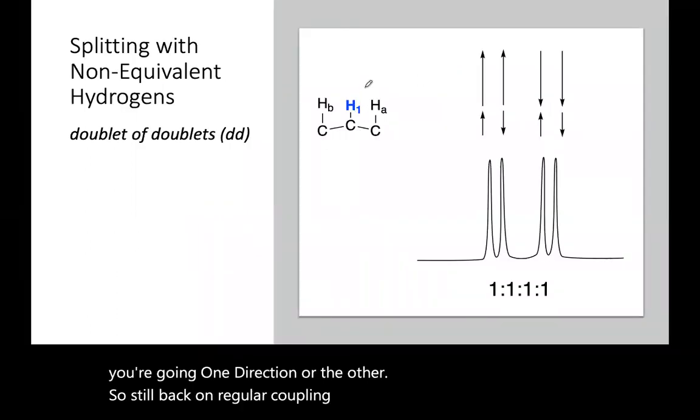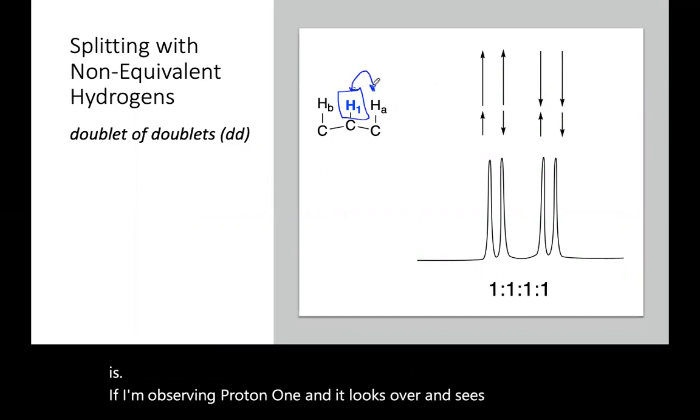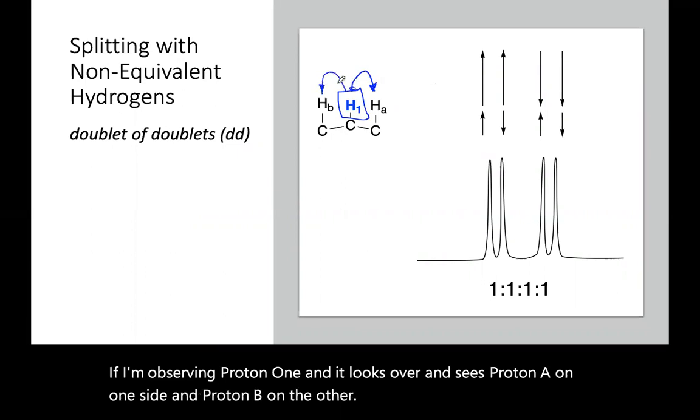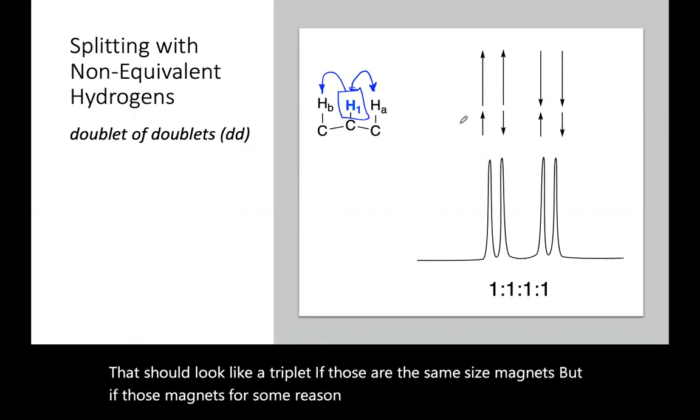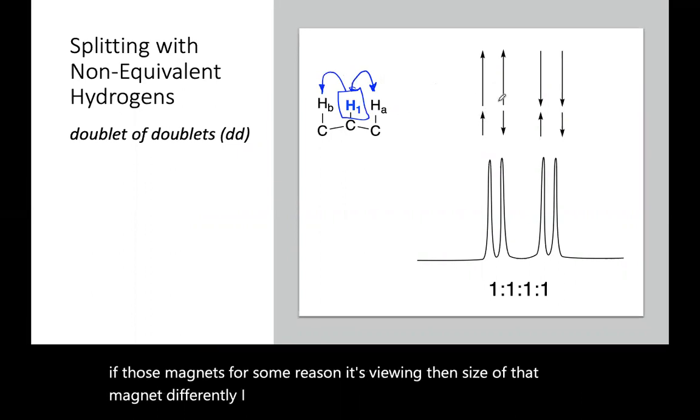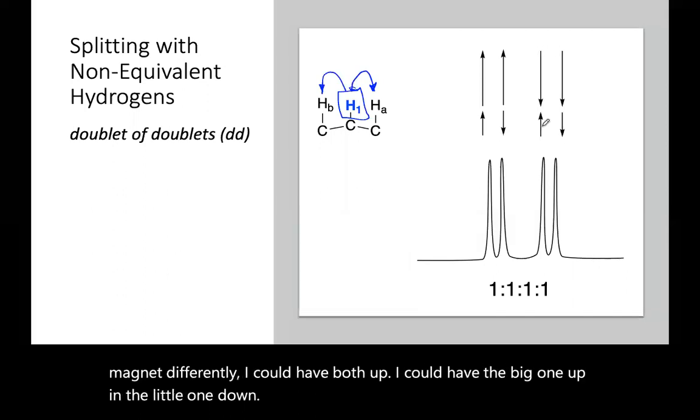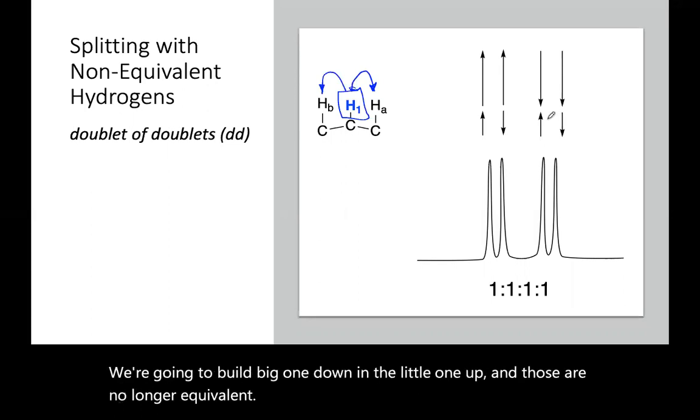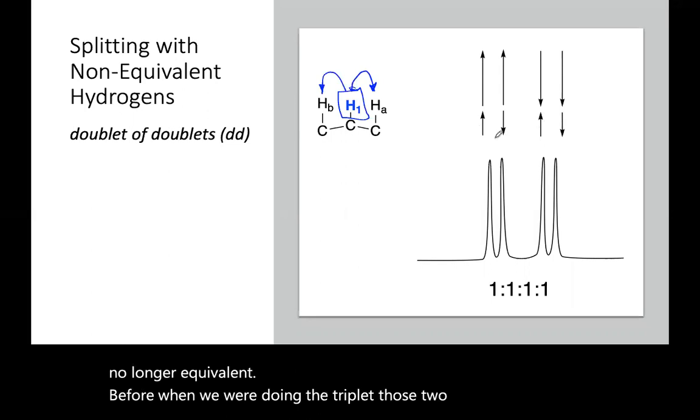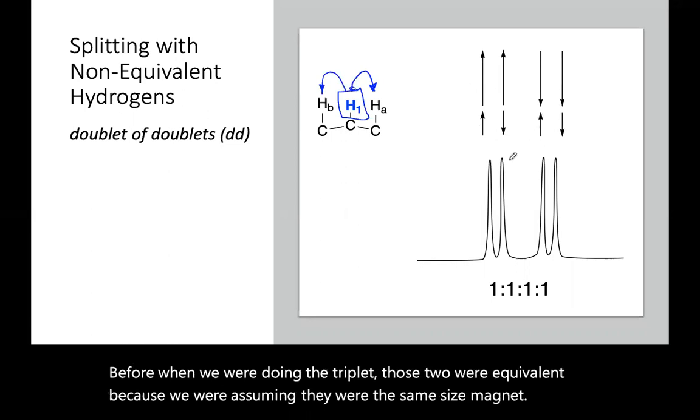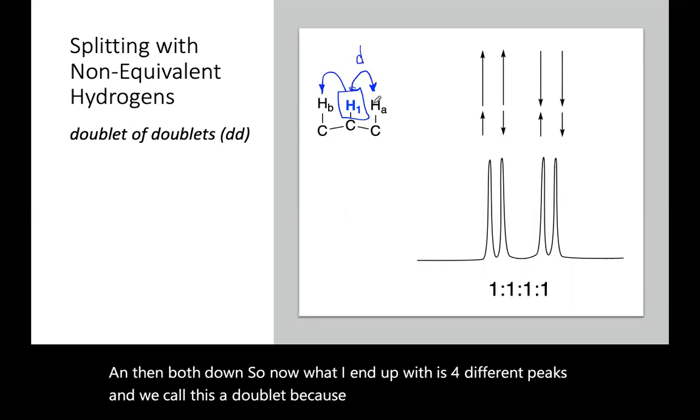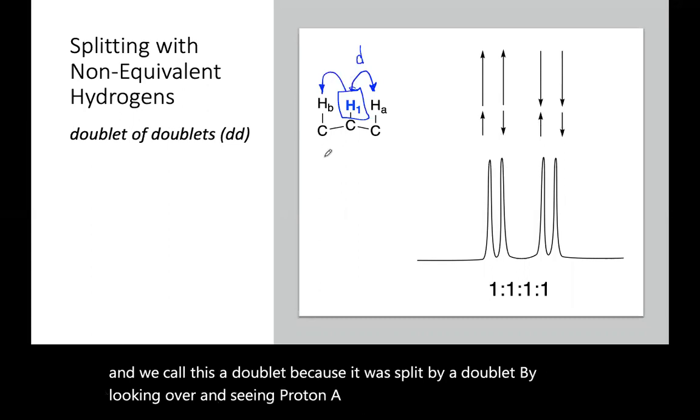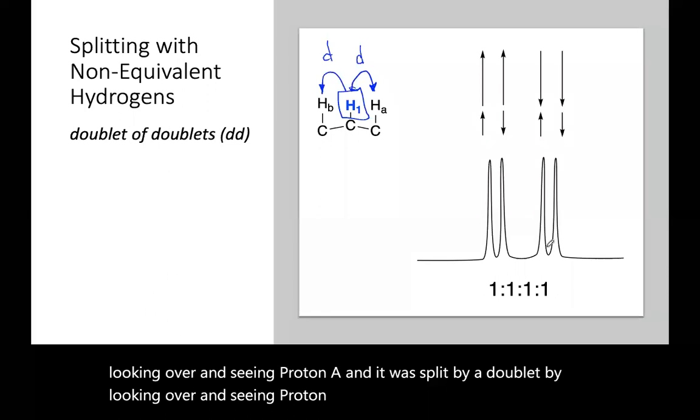Now what we're going to talk about is if I'm observing proton one, and it looks over and sees proton A on one side and proton B on the other, that should look like a triplet if those are the same size magnets. But if those magnets, for some reason, it's feeling the size of that magnet differently, I could have both up, I could have the big one up and the little one down, I could have the big one down and a little one up, and those are no longer equivalent. Before, when we were doing the triplet, those two were equivalent because we were assuming they were the same size magnet, and then both down. So now what I end up with is four different peaks, and we call this a doublet of doublets because it was split by looking over and seeing proton A, and it was split by a doublet by looking over and seeing proton B.